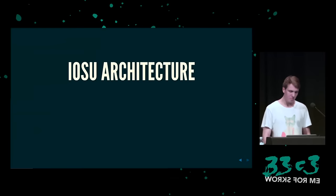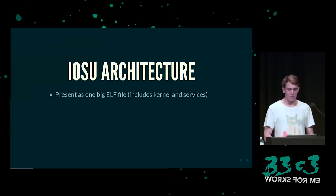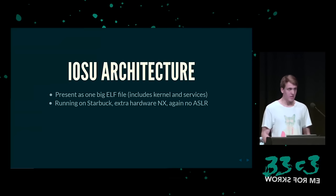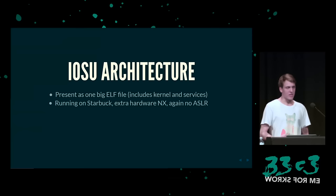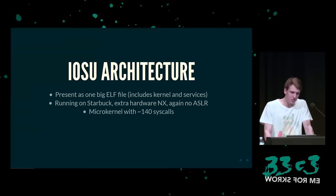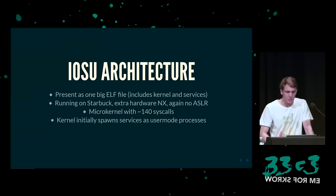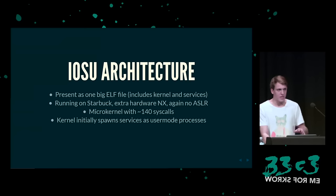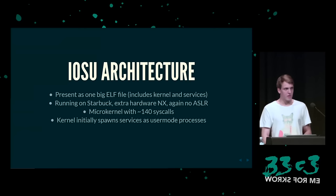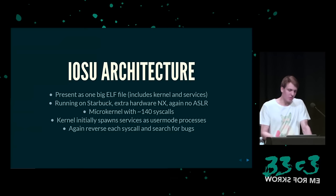Gucken wir uns die IOSU-Architektur an. Das ist ein großes ELF-File — da sind der Kernel und alle Dienste drin. Es läuft auf Starbuck, hat ein Hardware-NX-Bit und kein ASLR. Das ist ein Mikrokernel mit ungefähr 140 Syscalls. Der Kernel spawnt alle Dienste auf einmal. Bevor wir das exploiten, müssen wir erstmal einen der User-Mode-Prozesse exploiten — aber darüber reden wir nicht. Wir müssen wieder alle Syscalls umkehren und nach Bugs suchen.